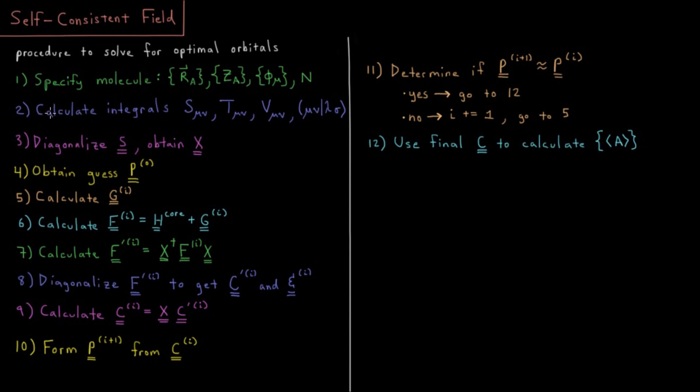Number two, calculate all the integrals. So various kinds of integrals we need between all of the basis functions we have. Between all pairs of basis functions, we need to calculate an overlap integral. We need to calculate a kinetic energy integral. Calculate a nuclear attraction integral for all nuclei.